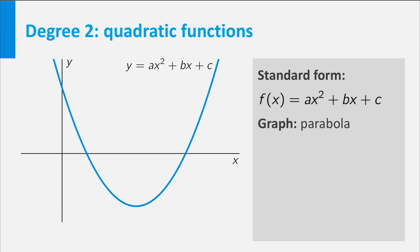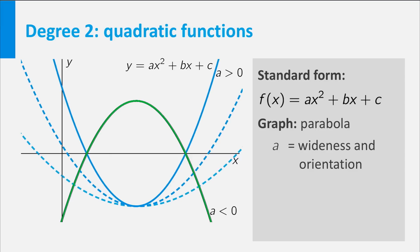The relation between the coefficients a, b and c of the polynomial on the one hand, and the shape of the graph on the other hand, is not as clear as in the case of linear functions. However, we can at least say the following. a is a measure for the wideness and orientation of the parabola. If a is positive, the parabola opens upward, if it is negative, it opens downward. Also, the closer a to 0, the wider the parabola is.